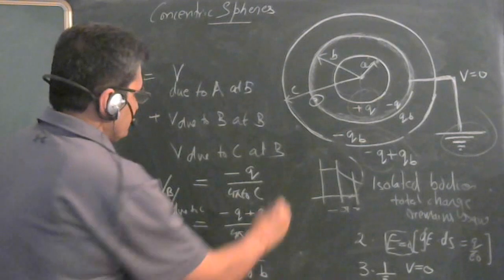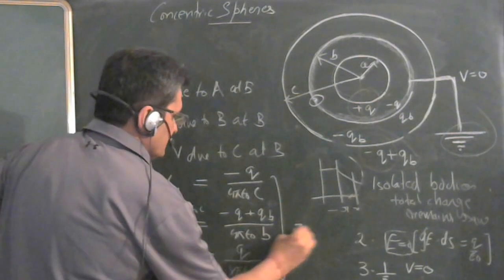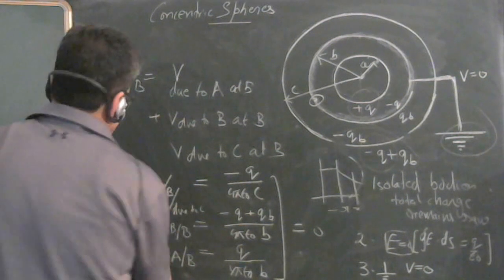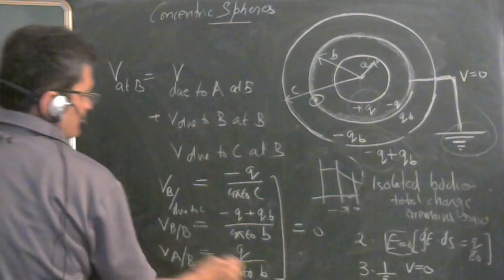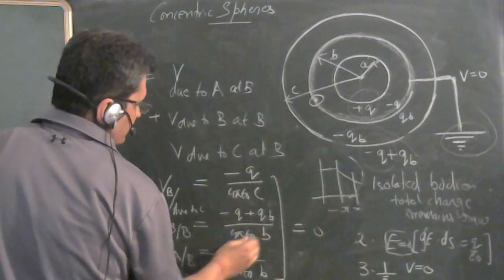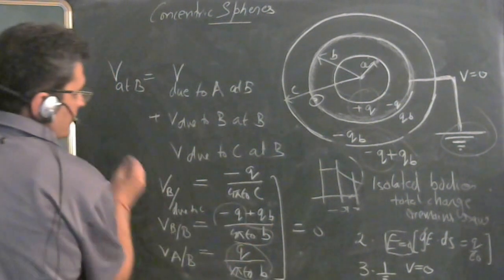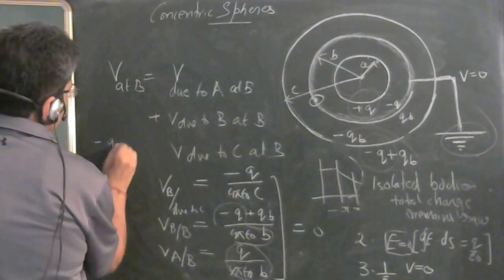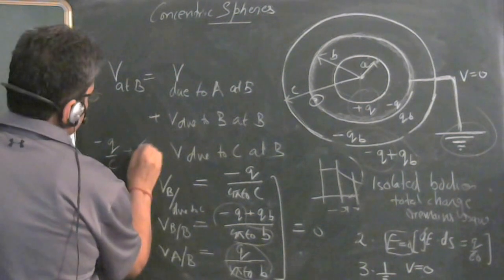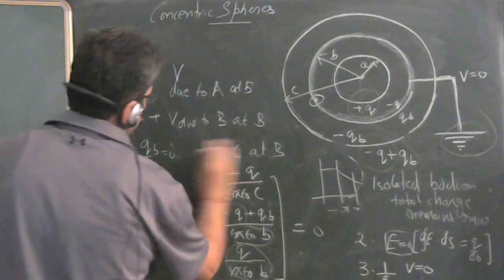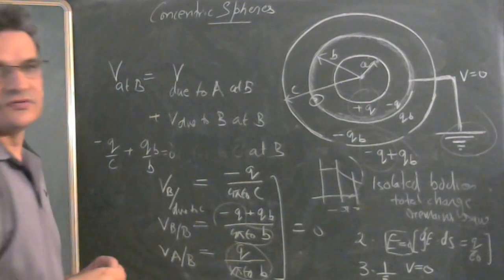Now, add these three and they are equal to zero. So it becomes, this will get cancelled, this part will get cancelled. So you will get minus Q upon C plus QB upon B is equal to zero. This is the relationship we are getting.